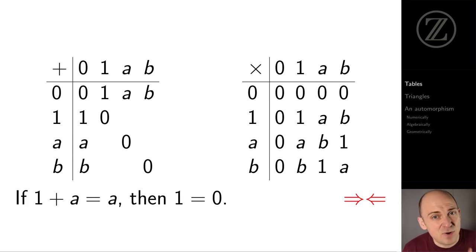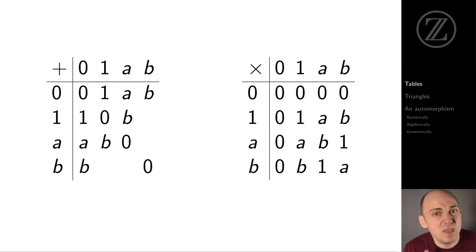1 plus A is either A or B. But if 1 plus A equals A, then adding the additive inverse of A to both sides gives us that 1 equals 0, a contradiction. So it must be that 1 plus A equals B. Now that forces 1 plus B to be equal to A. And finally, we find that A plus B equals 1.